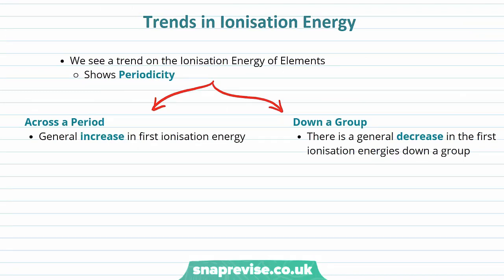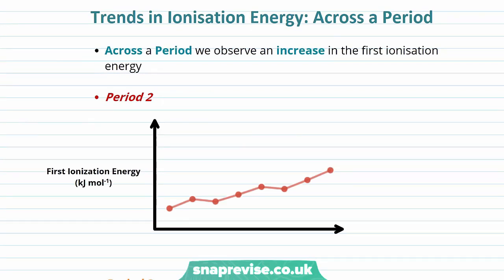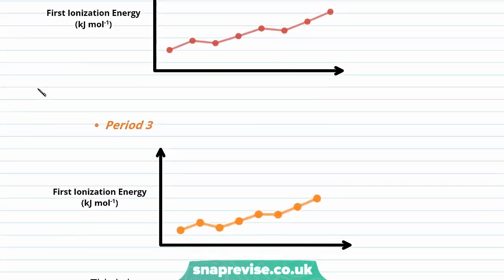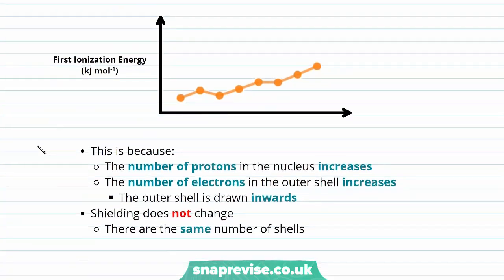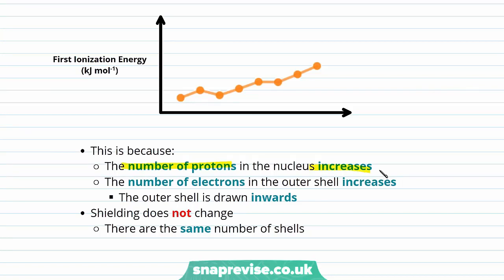Looking at trends in ionization energy: ionization energy shows periodicity. Across a period, there is a general increase in the first ionization energy, as shown in this graph for period two — the same general pattern is observed in period three. This occurs because the number of protons in the nucleus increases across a period, drawing the outer shell inwards. The level of shielding does not change — there are the same number of shells. As a result, the atomic radius decreases, more energy is required to remove the outermost electrons, and we see a general increase in the first ionization energy.